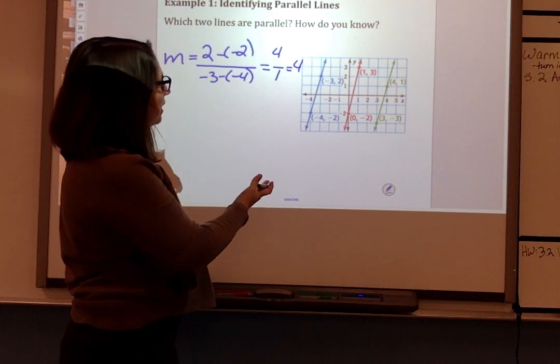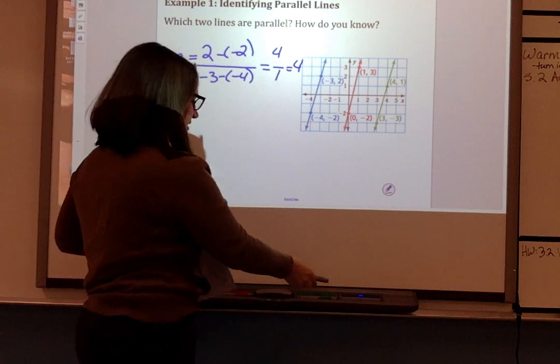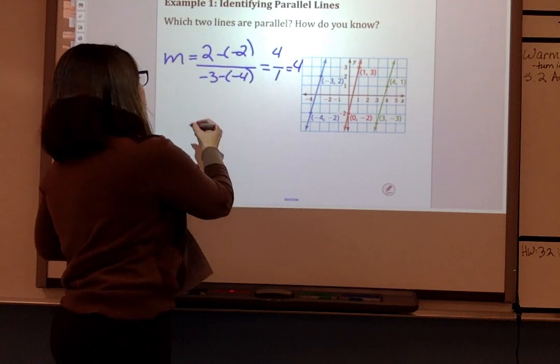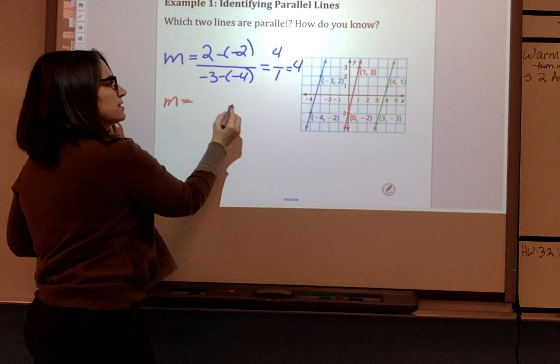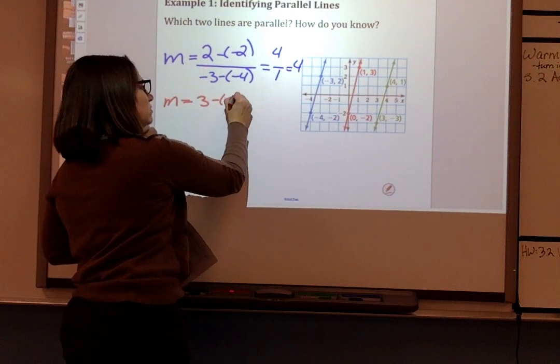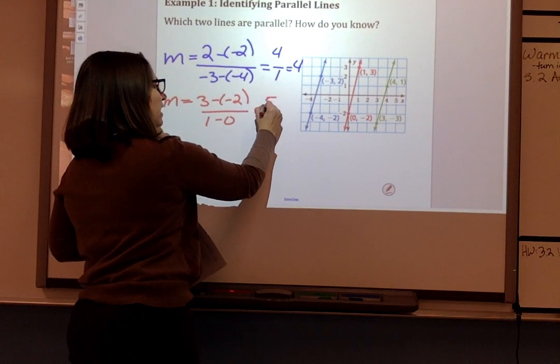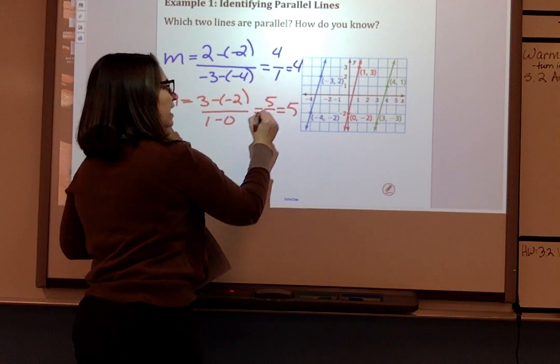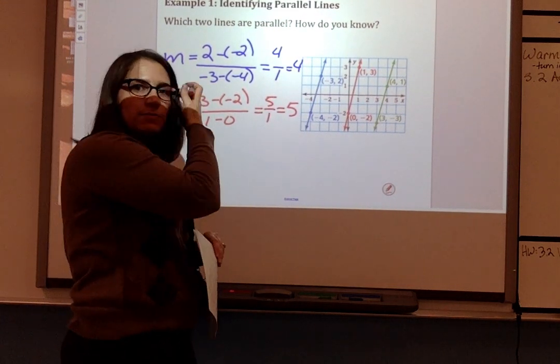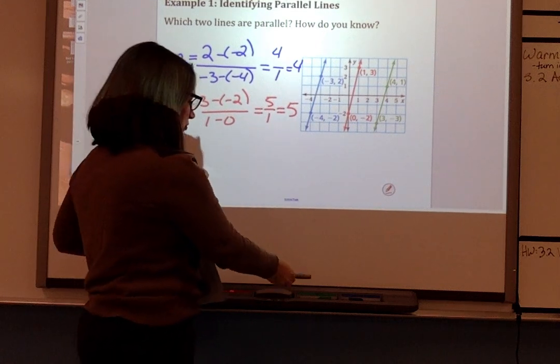Let's do the red line. The slope is 3 minus negative 2 all over 1 minus 0. So that's 5 over 1 or 5. So it is also a pretty steep slope. It is not parallel to the blue one, though.